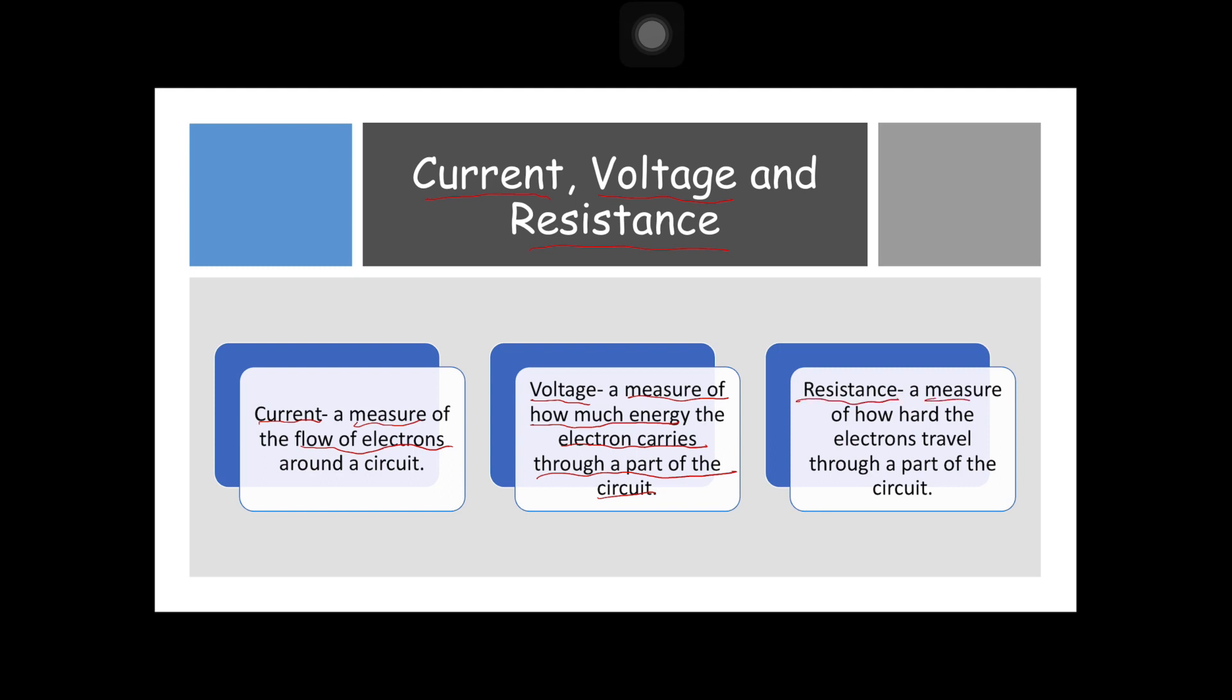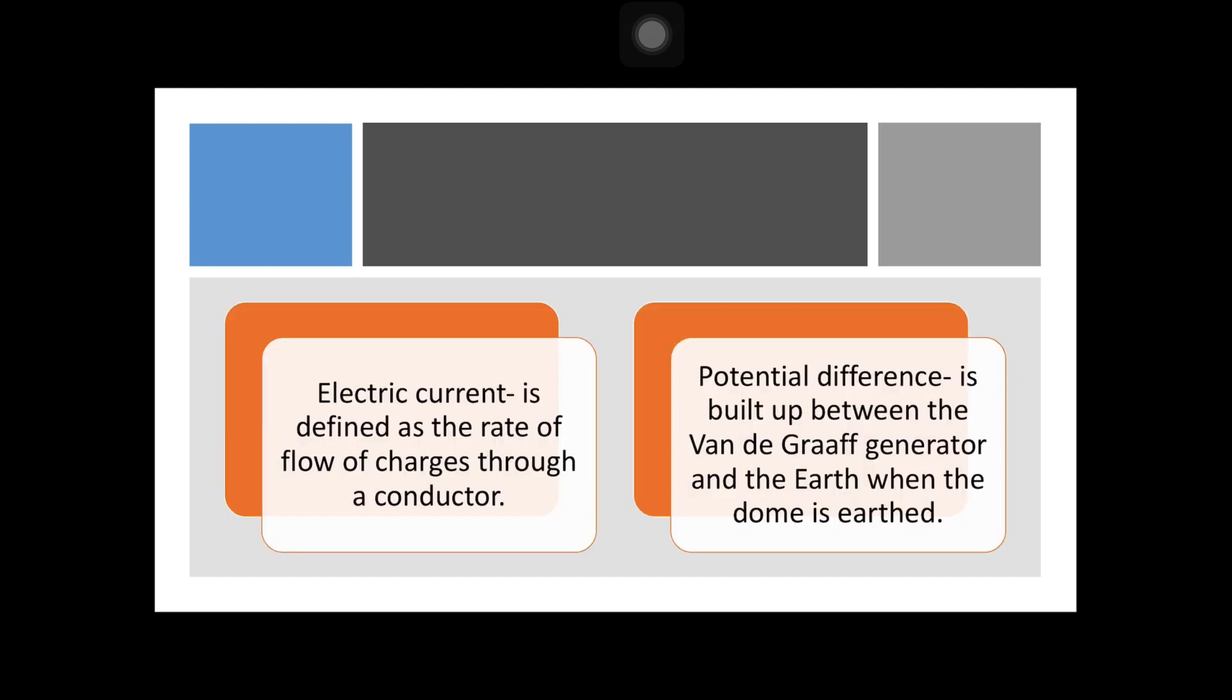Electric current is defined as the rate of flow of charges through a conductor. Potential difference is built up between the Van de Graaff generator and the Earth when the dome is earthed.